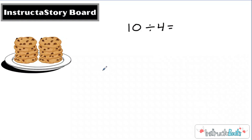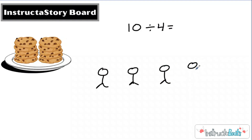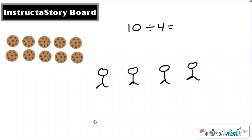So here we have one friend right here — just people, no details — and we have your four friends right there. If you remember our Introduction to Division lesson, division is when we take a total and we split it into equal groups. Let's get rid of the plate and just get our cookies here to make it easier to separate them out.